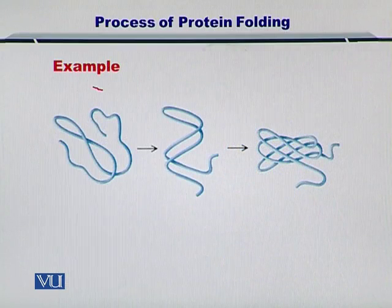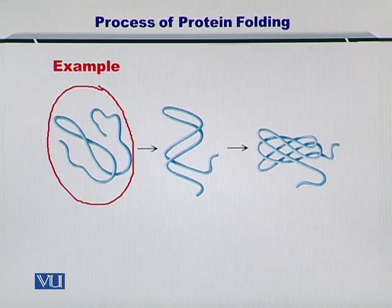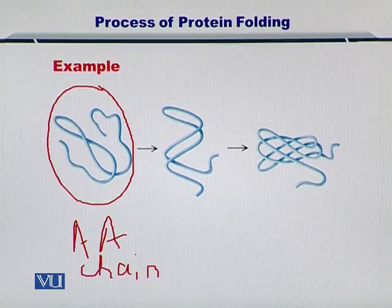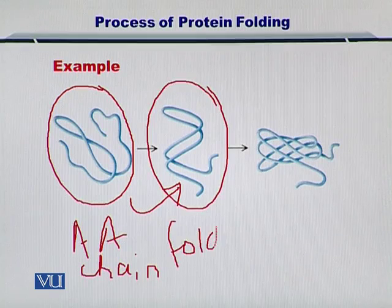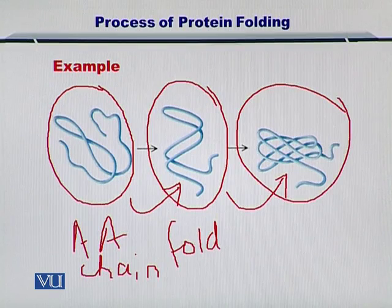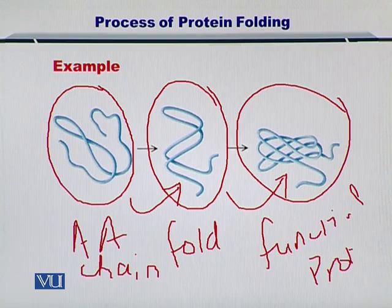Let's take an example. If you have a simple polypeptide amino acid chain, then it takes a preliminary folded form as shown here, and eventually the entire protein gets folded into a functional protein. All four of these interactions may be taking place at the same time at several locations within the protein.